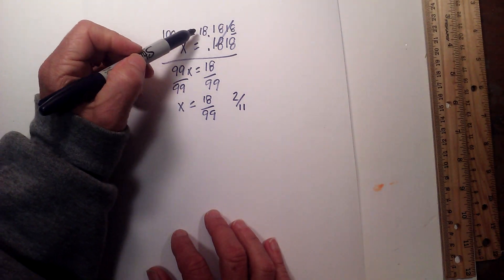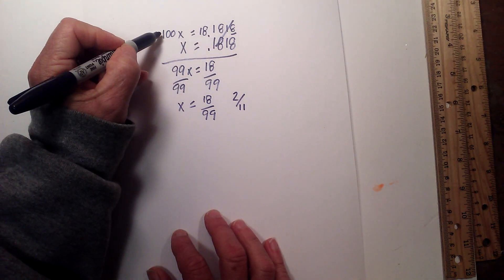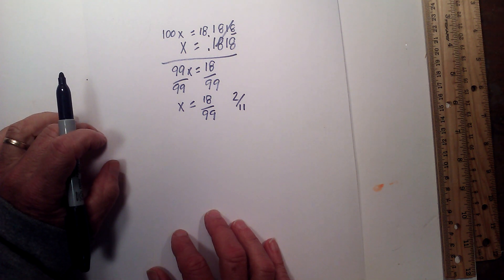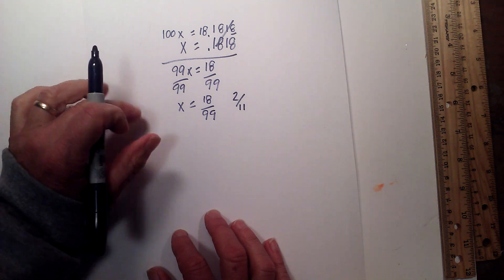Okay, so again to repeat, since we have 2 digits repeating, we'll multiply it by 100 instead of 10. Now sometimes you'll get something with a non-repeating number.